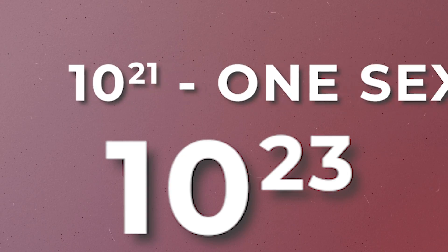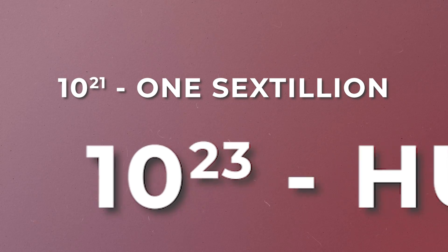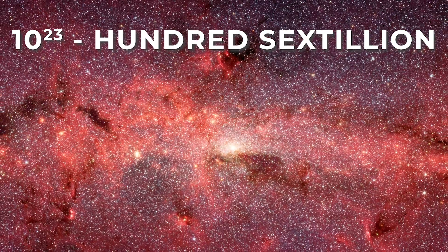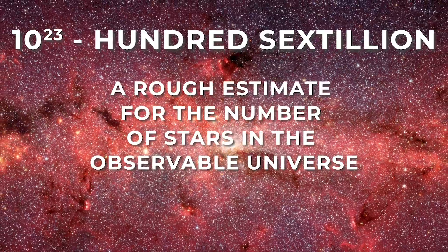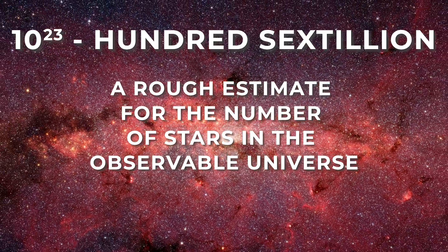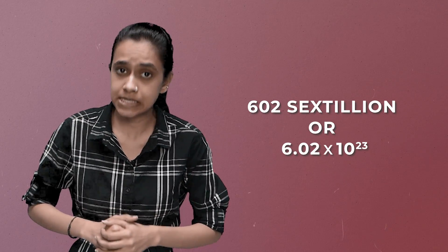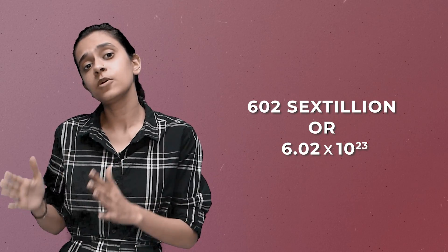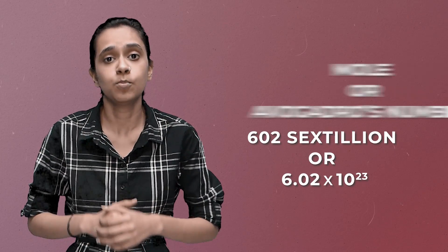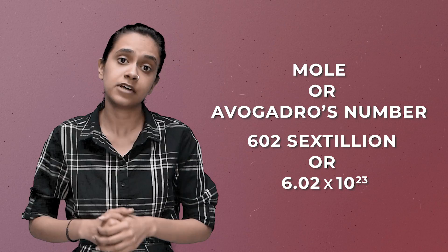If you took 100 quintillion steps from one corner of the Milky Way, you would reach the other corner. Moving further, we reach numbers like 160 billion billion — the estimated total number of stars in the entire observable universe. You may also recognize Avogadro's number from school: 6.02 × 10 to the power 23, which is 1 mole.